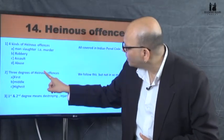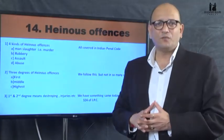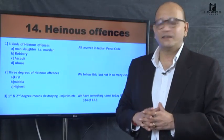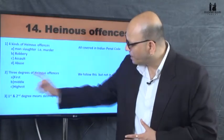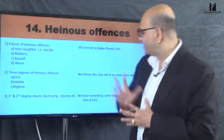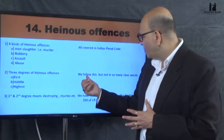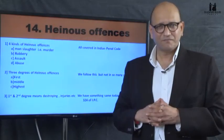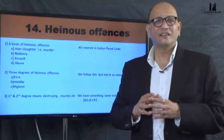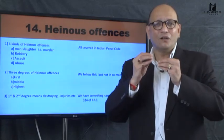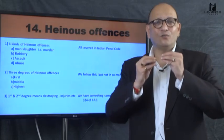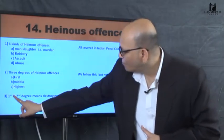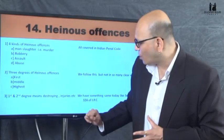Naradaspati gives three different degrees for Heinous Offenses: First, Middle, and Highest. We follow this concept today as well, though not in such clear words. For example, when we say 'rarest of the rare,' we are essentially assigning a degree to a particular offense.